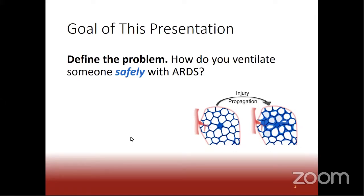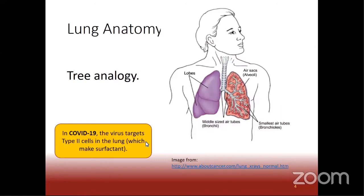Safely is the key word I really want you thinking about throughout this talk. I want to start from a place looking at lung anatomy so we're all on the same page. One of the ways I like to think about the lung is through a tree analogy. If you think about the trachea as the trunk of the tree, as your branches get smaller and smaller, you'd have leaves on the ends — but instead of leaves, we have alveoli, which are air sacs.